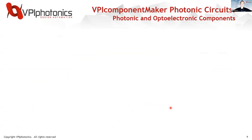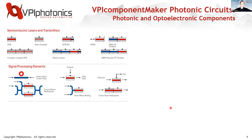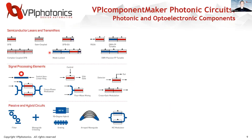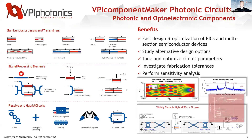Moving up to the next level — VPI Component Maker Photonic Circuits — it's a schematic-based tool with a number of building blocks including different active devices. You can stack these together to put together something like a semiconductor laser, signal processing elements, and passive and hybrid circuits. This tool is very fast but also accurate — simulations can take anywhere from a few seconds to a few minutes. You can use it to study design alternatives and tune circuit parameters, including fabrication tolerances.